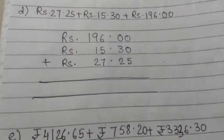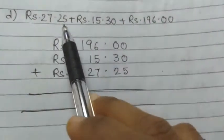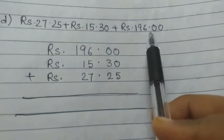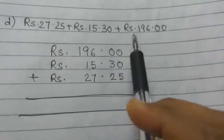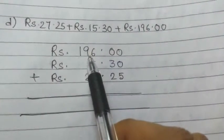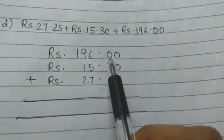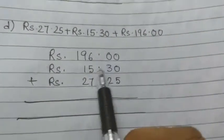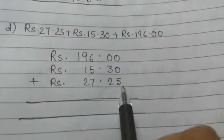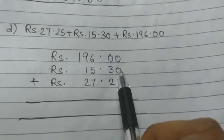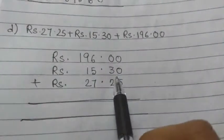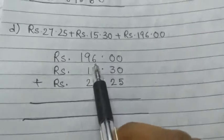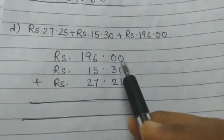Next d number: 27 rupees 25 paise plus 15 rupees 30 paise plus 196 rupees. You have to add these 3 together. So we will first choose the highest rupees given, that is 196. Then write 15 rupees 30 paise, then 27 rupees 25 paise. But as it is in 100 place, we will write this rupees in the topmost position.